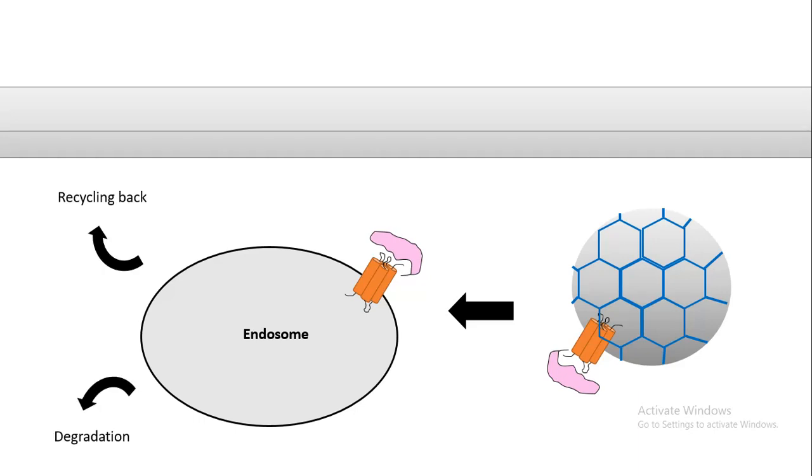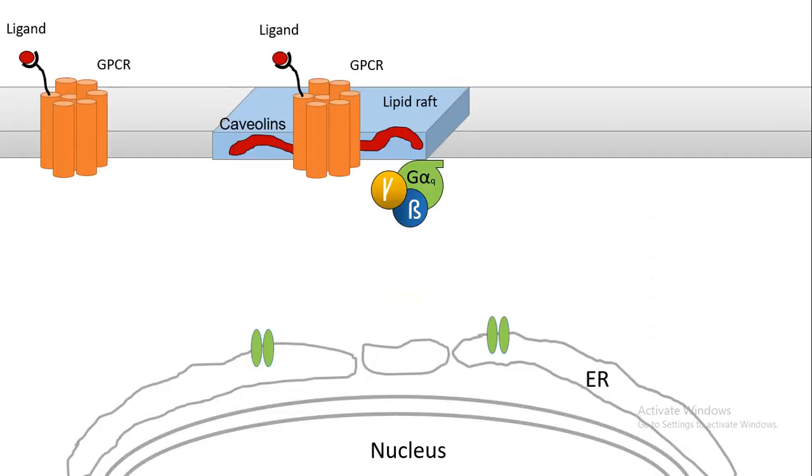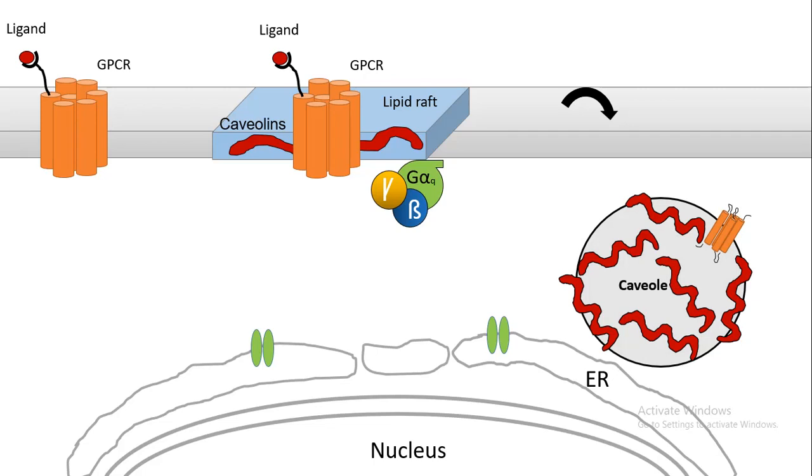Not only clathrin-based endocytosis is the mechanism of G protein internalization. It has been also seen that G proteins are associated with lipid rafts, so they are also co-localized with caveolin. That's why caveolin-mediated endocytosis is another mechanism of G protein signaling termination or receptor desensitization.